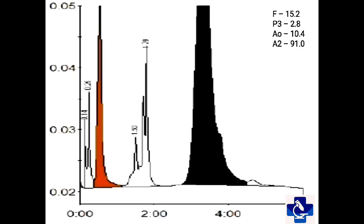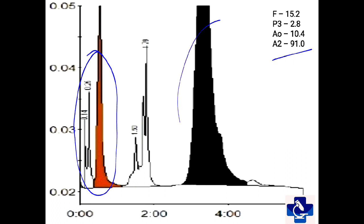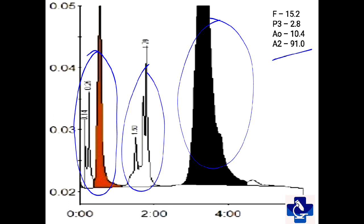In this case, fetal hemoglobin is around 15.2%. A2 forms the major fraction at around 91%, but we also have A0 of around 10.4%. So this is likely a case of HbE and beta-plus thalassemia, as there is synthesis of some A0. Also, the differential diagnosis can be an HbE homozygous patient having had a recent blood transfusion.